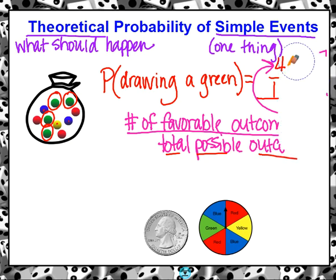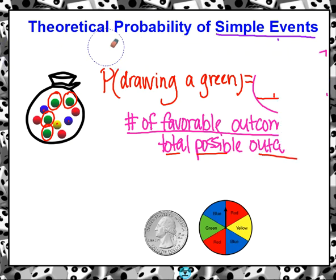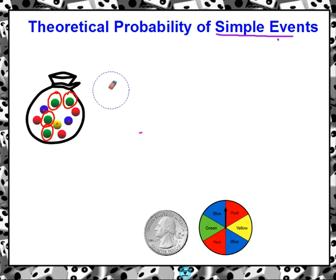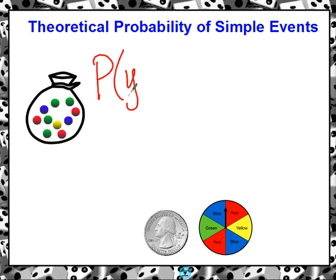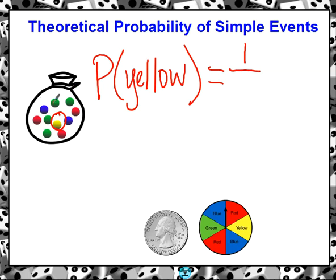Let's do another example. This time we want the probability of drawing a yellow marble. You look at the bag of marbles — there is one yellow out of ten total. We already know there are ten, so the probability of drawing a yellow would be one out of ten.